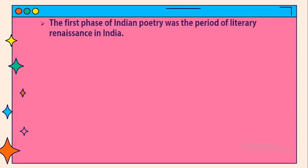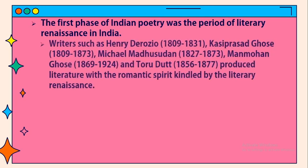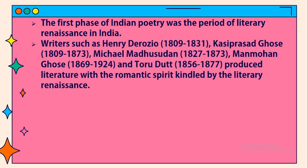The first phase of Indian poetry coincided with the period of literary renaissance in India. Writers such as Henry Derozio, Kasi Prasad Ghosh, Michael Madhusudan, Manmohan Ghosh, and Toru Dutt produced literature imbued with the romantic spirit kindled by the literary renaissance.